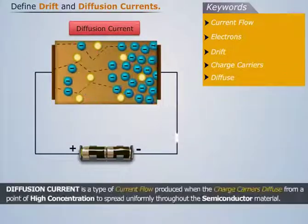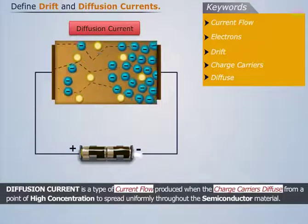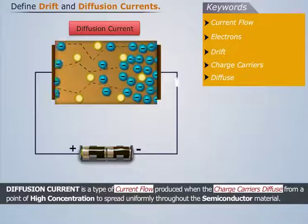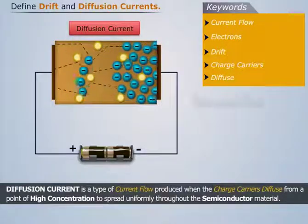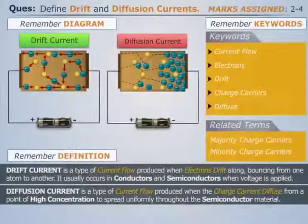Thus, diffusion current is a type of current flow produced when the charge carriers diffuse from a point of high concentration to spread uniformly throughout the semiconductor material.